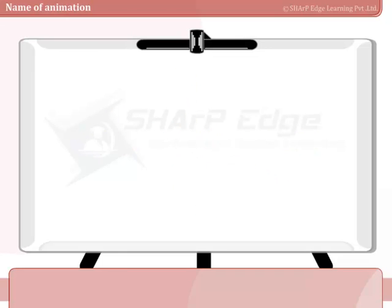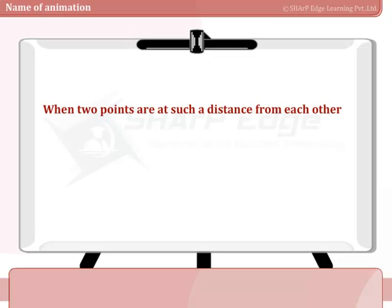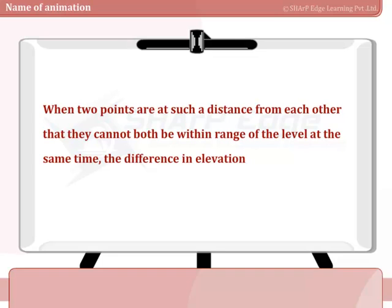Differential leveling: When two points are at such a distance from each other that they cannot both be within range of the level at the same time, the difference in elevation cannot be found in a single setting.